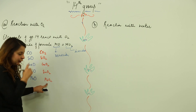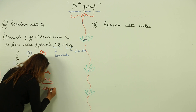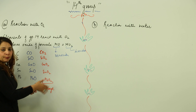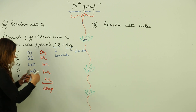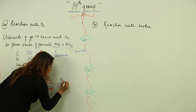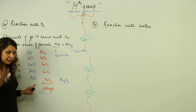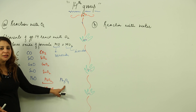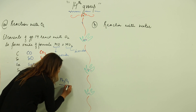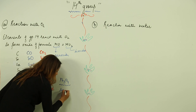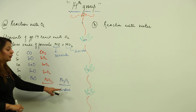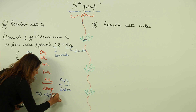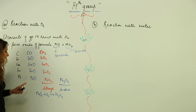Lead monoxide (PbO) has a common name — it is called litharge. Apart from PbO and PbO2, lead also exists in another oxide with the formula Pb3O4, so lead has three oxides: it exists as monoxide, dioxide, and Pb3O4. The name for Pb3O4 is sindur. Pb3O4 is formed when oxygen is added to litharge.